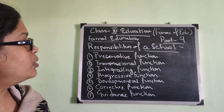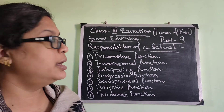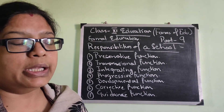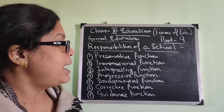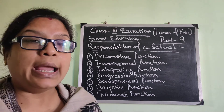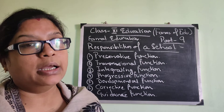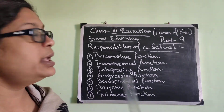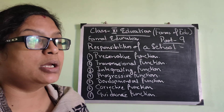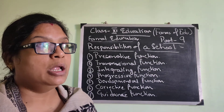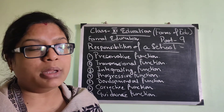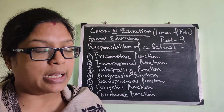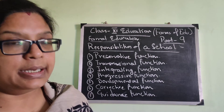All these points you are going to find in your book and I think you have understood. When we get a live class, we will mark it, and it will help you more if you get the PDF along with the video. Next day we are going to discuss the limitations of the school — being an institute of formal education, there are some limitations as well. Thank you.